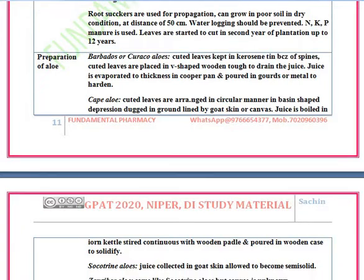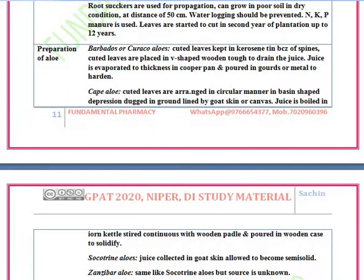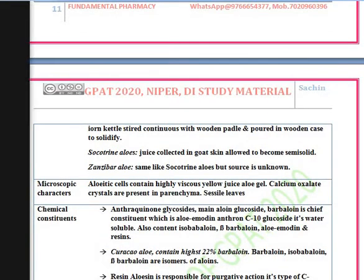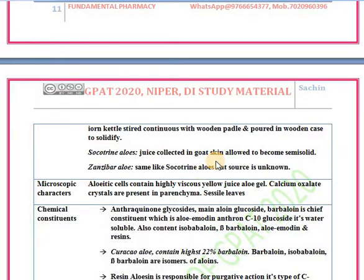Next is Socotrine aloe. The juice is collected in a goat skin and allowed to become semi-solid, then marketed under the name of Socotrine aloe.